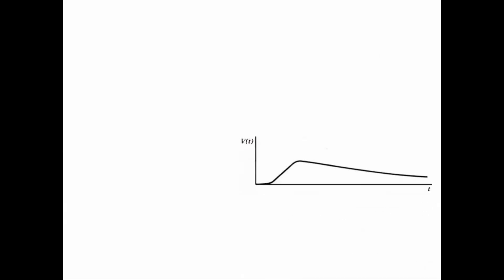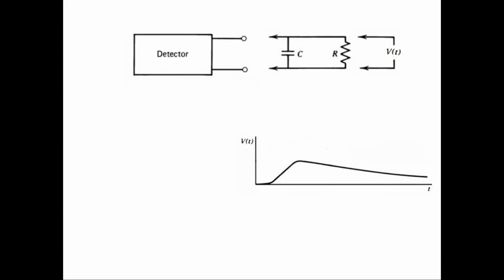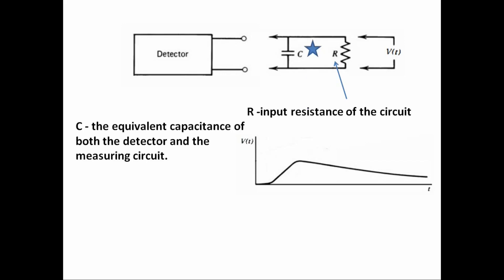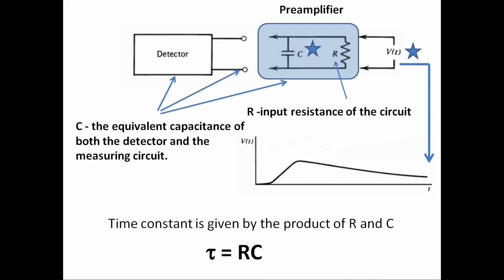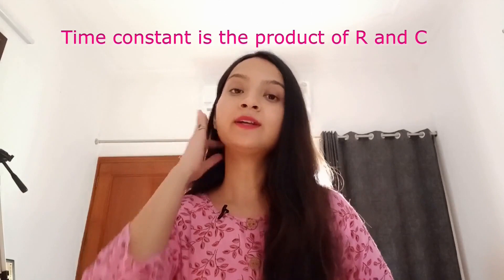The nature of the signal pulse produced from a single event depends upon the input characteristics of the circuit to which the detector is connected. As you can see in this equivalent circuit, R represents the input resistance of the circuit and C represents the equivalent capacitance of both the detector itself and the measuring circuit. For example, if a preamplifier is attached, R is its input resistance and C is the summed capacitance of the detector, the connecting cable, and the input capacitance of the preamplifier. Vt is the time-dependent voltage across the load resistance, and it is this fundamental signal voltage on which pulse mode operation is based.